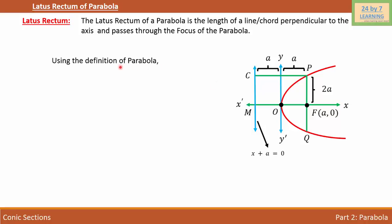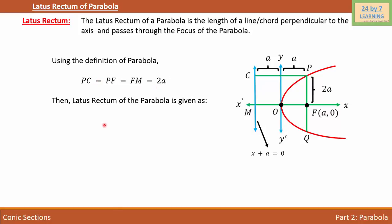The distance from P to C is 2a, and the distance from P to F is also 2a. Using the definition of the parabola — PC equals PF — and since PF equals FM, all these distances are equal to 2a. The latus rectum PQ equals PF plus FQ. Since PF is 2a, FQ is also 2a. So PQ equals 2a plus 2a, which gives us 4a.